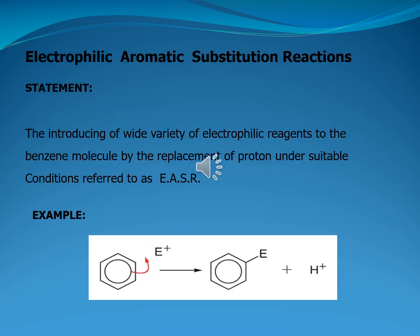Now we come to the real topic — electrophilic aromatic substitution reactions. The introducing of a wide variety of electrophilic reagents to the benzene molecule by the replacement of a proton under suitable conditions is referred to as electrophilic aromatic substitution reactions. The pi electrons of the benzene molecule make a bond to the incoming strong electrophile, and we observe a substituted benzene molecule in the product by removal of a proton.